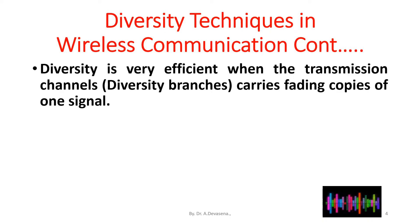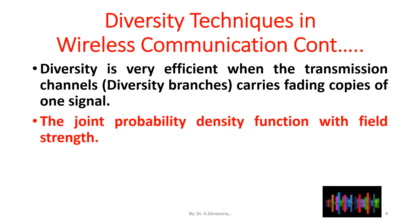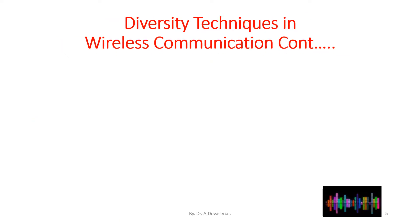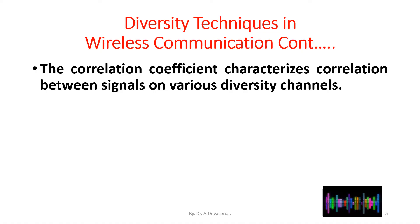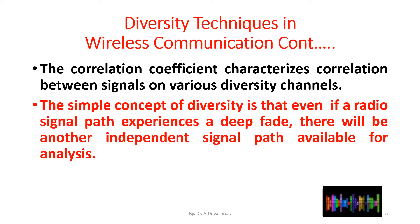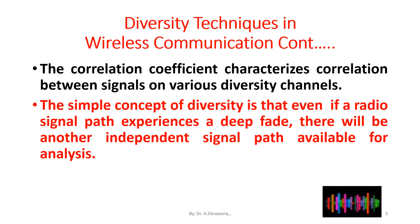Diversity is very efficient when the transmission channel carries fading copies of one signal. The joint probability density function with field strength pdf r1, r2, r3 is somewhat equal to the marginal pdf for wireless channels. The correlation coefficient characterizes correlation between signals on various diversity channels. The simple concept of diversity is that even if a radio signal path experiences a deep fade, there will be another independent signal path available for analysis.